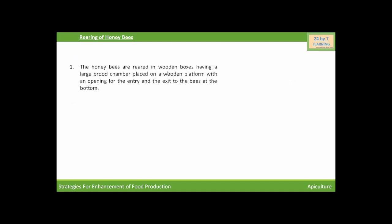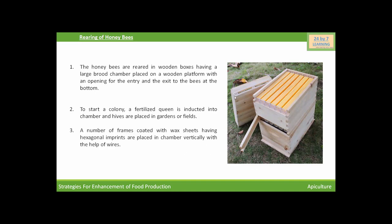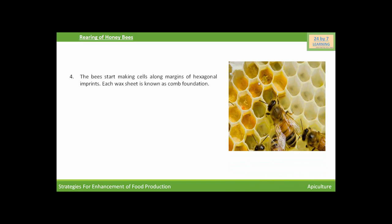Honeybees are reared in wooden boxes having a large brood chamber placed on a wooden platform with an opening for entry and exit at the bottom. This wooden box is where honeybees are reared. To start a colony, a fertilized queen is introduced into the chamber and hives are placed in gardens or fields. A number of frames coated with wax sheets having hexagonal imprints are placed in the chamber vertically with the help of wires. The bees start making cells along the margins of hexagonal imprints, and each wax sheet is known as a comb foundation. When sufficient honey has been stored, combs from the frames are removed and then centrifuged to extract the honey.